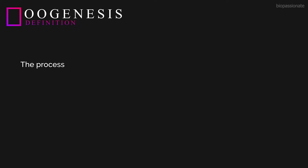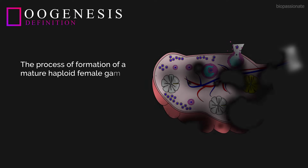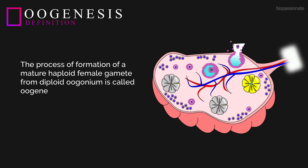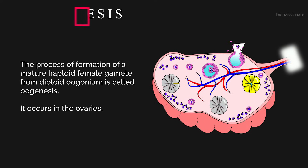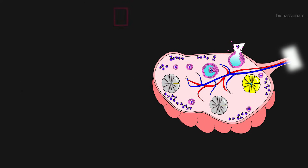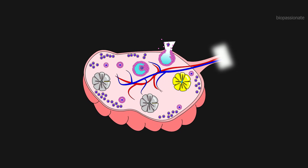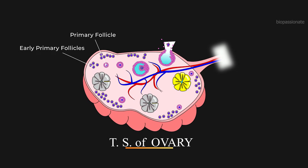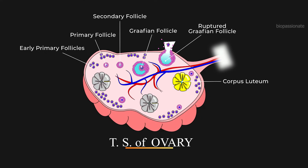Oogenesis is the process of formation of a mature haploid female gamete from a diploid oogonium. It occurs in the ovaries. Before jumping to the concept, let's go through the section of an ovary. Oogenesis consists of three major phases: multiplication phase, growth phase, and maturation phase.